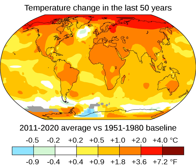Effects of climate change on humans: the effects of climate change on humans, mostly due to warming and shifts in precipitation, have been detected worldwide. Impacts are now observable on all continents and across ocean regions, with low-latitude, less developed areas facing the greatest risk. Continued warming has potentially severe, pervasive, and irreversible impacts for people and ecosystems. The risks are unevenly distributed, but are generally greater for disadvantaged people in developing and developed countries.